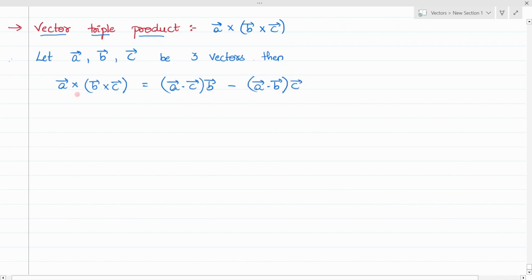So how to remember this? First multiply the A vector with the far value, which is far away from A vector, that is A dot C, and write B as it is. Next multiply A vector with the remaining thing, that is B, and write C as it is.